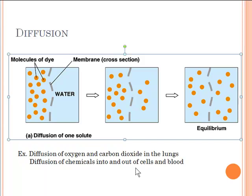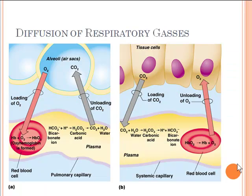A few quick examples of diffusion in the body: oxygen diffuses from high concentration inside your lungs to low concentration inside your bloodstream, and CO2 diffuses from high in the bloodstream to low in the lungs. So the process of breathing in and out is all controlled by diffusion. A lot of diffusion also occurs in your digestive system when substances you've eaten move from high to low out of your digestive system and into your blood.